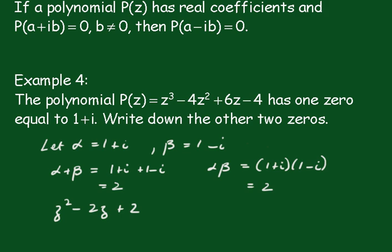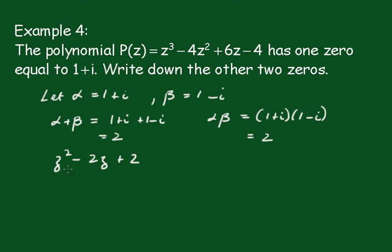And having established that, we can see that this polynomial P(z) must be equal to (z - k) times (z² - 2z + 2). It's not necessary to divide; it's much quicker doing it this way.